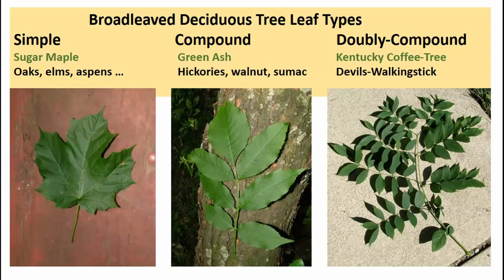Compound leaves are found on ash, hickories, walnut, sumac, and others — a separate leaf stem attaches to the twig with leaflets attached to that stem. We also have doubly compound leaves on Kentucky coffee tree, devil's walking stick, and sometimes honey locust, where a leaf stem has secondary leaf stems with leaflets attached to those — very large leaves, often two to three feet in length.